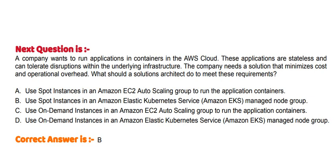Next question: A company wants to run applications in containers in the AWS Cloud. These applications are stateless and can tolerate disruptions within the underlying infrastructure. The company needs a solution that minimizes cost and operational overhead. Option A: Use Spot Instances in an Amazon EC2 Auto Scaling group to run the application containers. Option B: Use Spot Instances in an Amazon Elastic Kubernetes Service managed node group.